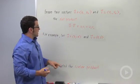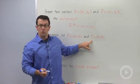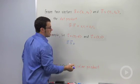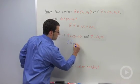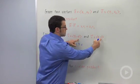Let's try it in an example. I have u equals 3, negative 4 and v equals 5, 2. u dot v equals 3 times 5 plus negative 4 times 2.